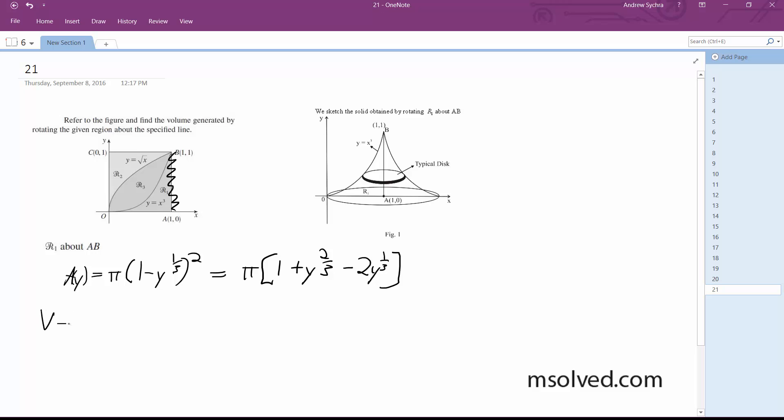Alright, so the volume is going to be equal to π, integrate this from zero to one, (1 + y^(2/3) - 2y^(1/3)) dy.